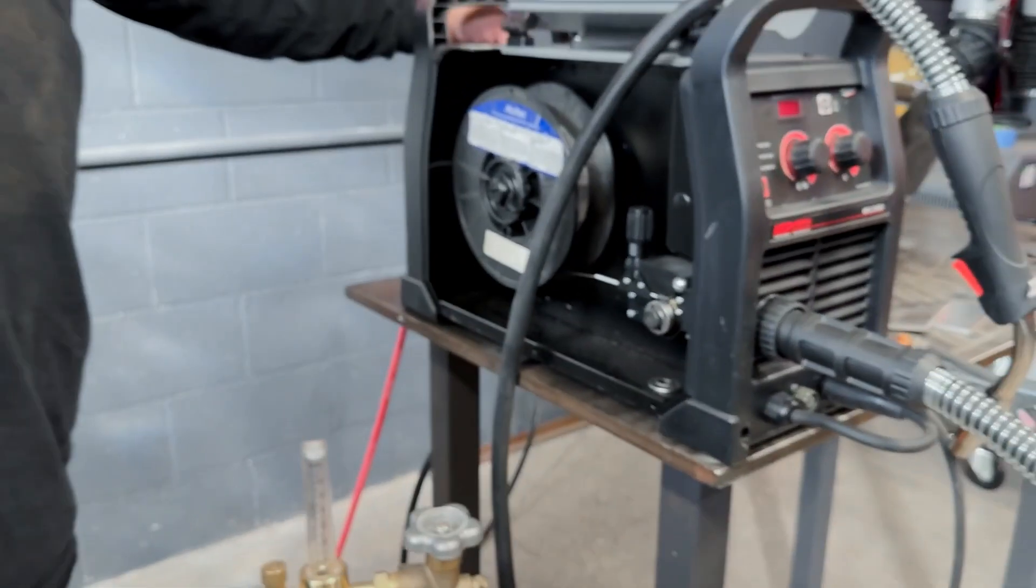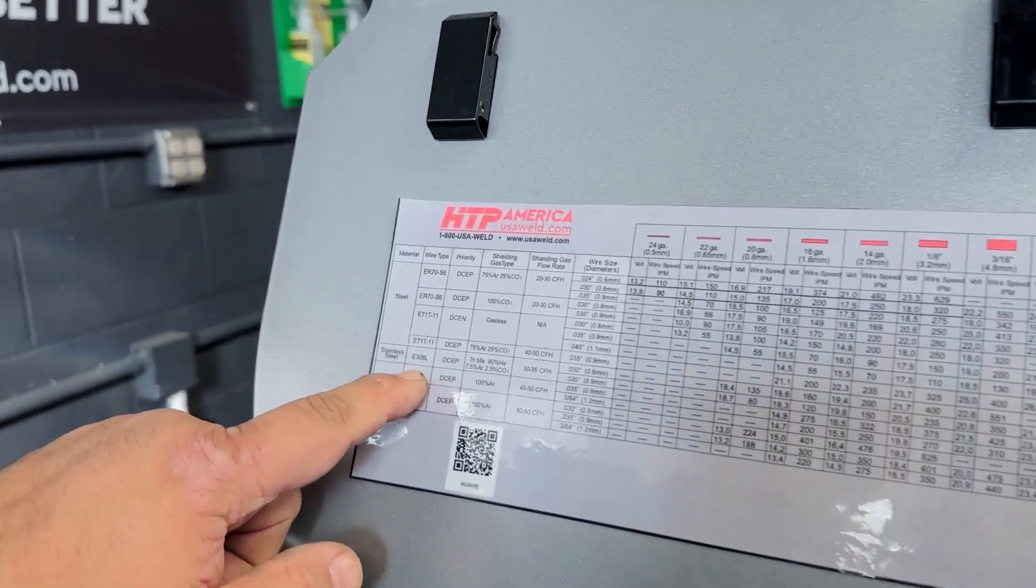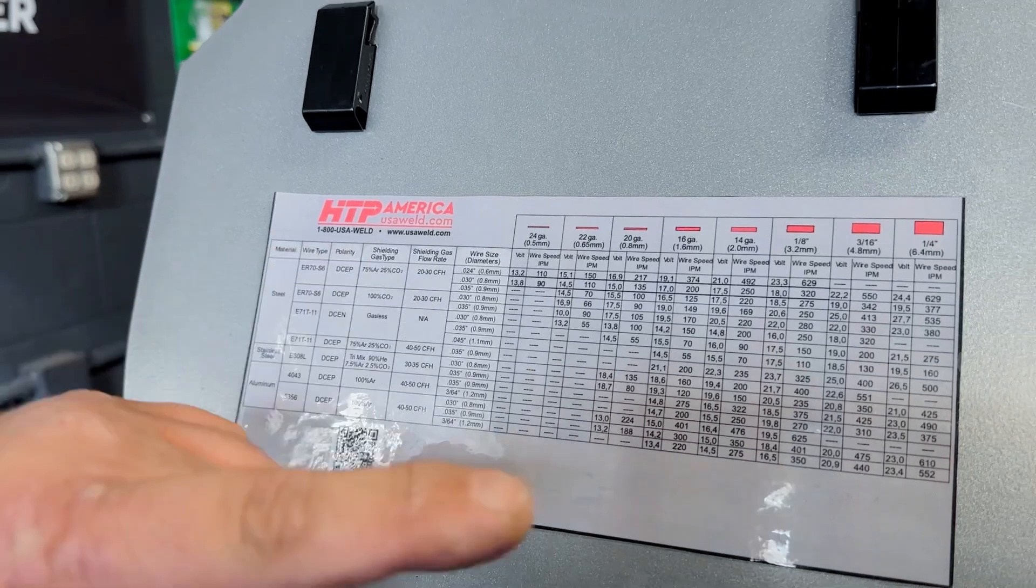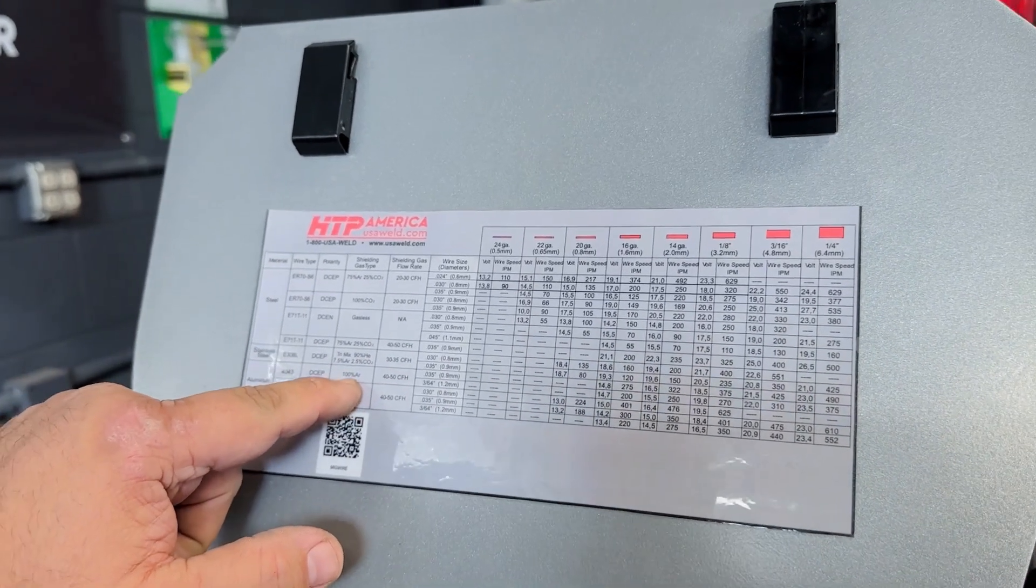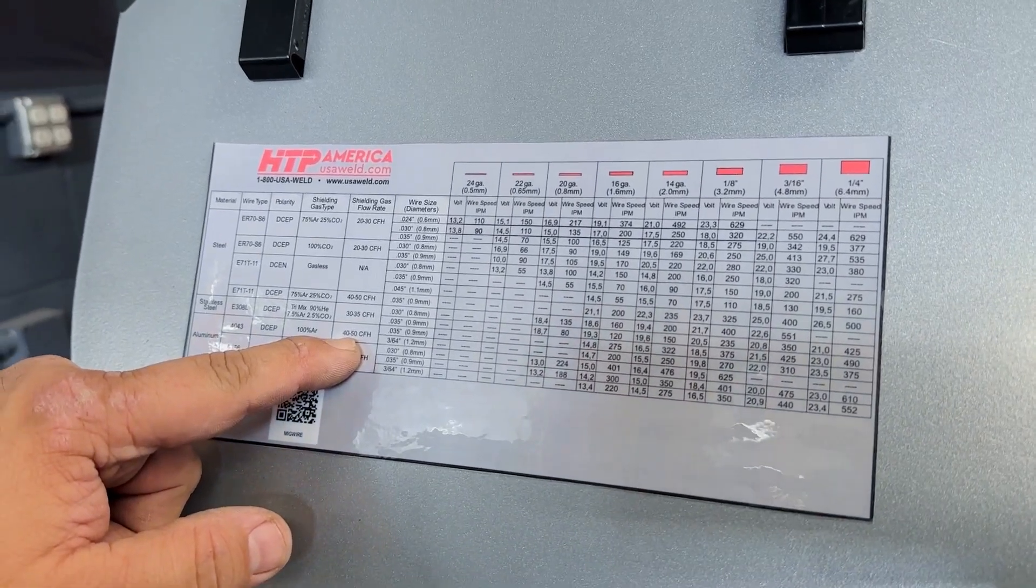So now you go to aluminum, 4043, DC electrode positive. We didn't change the polarity on the front, we're good. 100% argon, we switch this, 40 to 50 CFH on the flow rate.